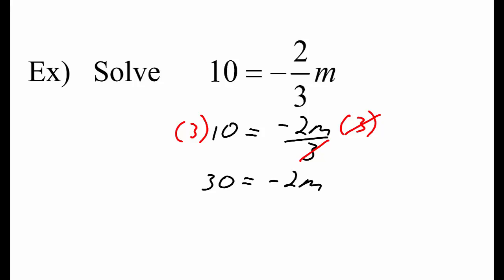To undo multiply by negative 2, we divide both sides by negative 2. And we get negative 15 equals m.